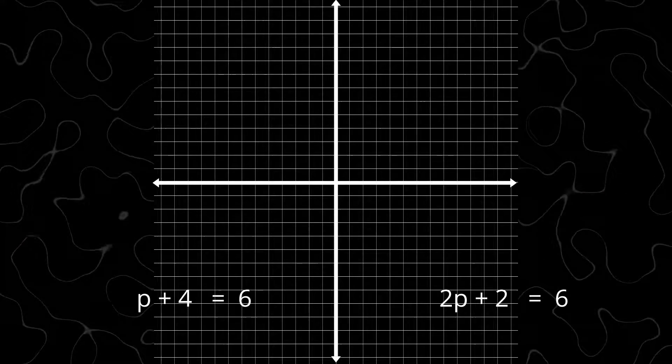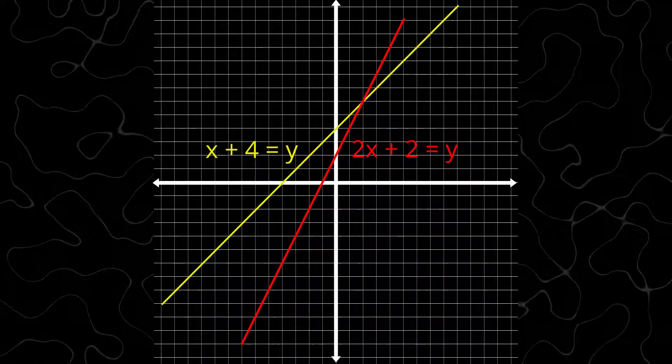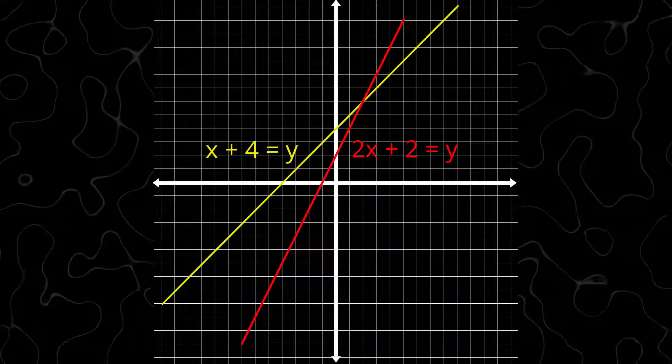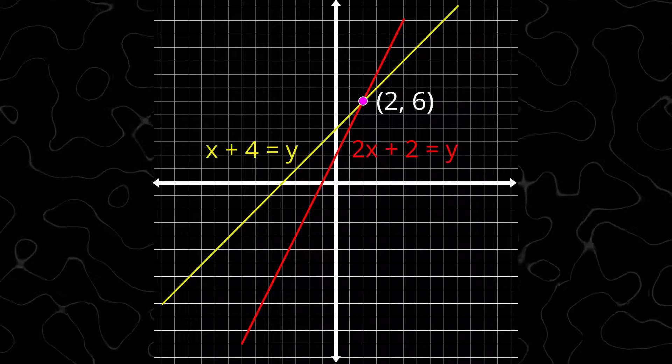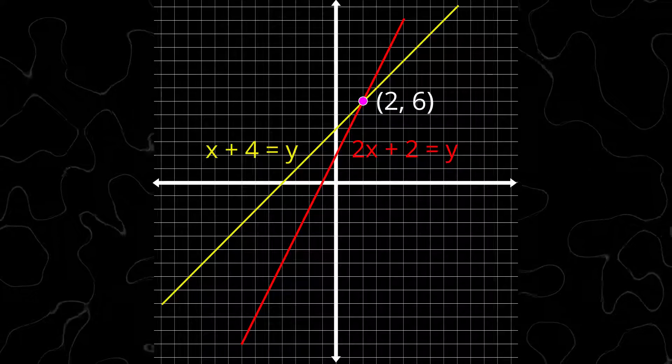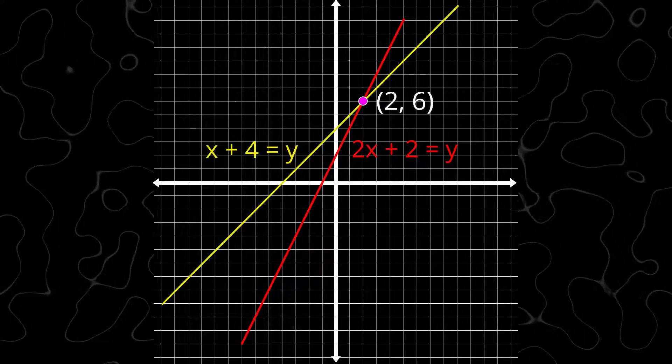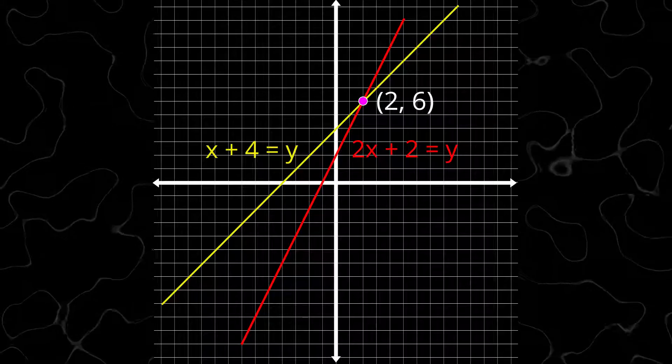If we graph these equations as x plus 4 equals y and 2x plus 2 equals y, we can see why we notice these things. The graphs intersect at x equals 2, y equals 6, or the point (2, 6). This point (2, 6) is a solution to both equations, and this is the only common solution since the two lines will never meet again.